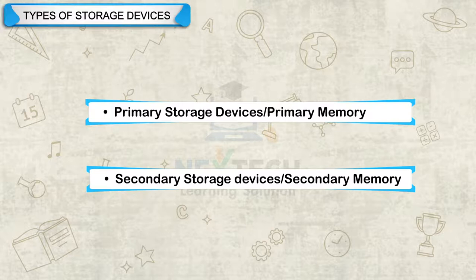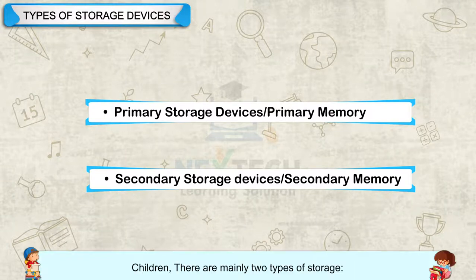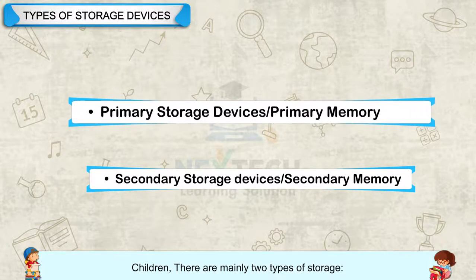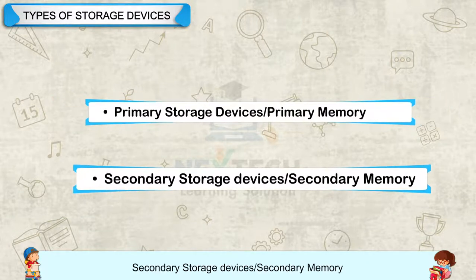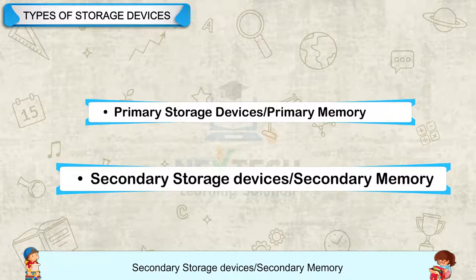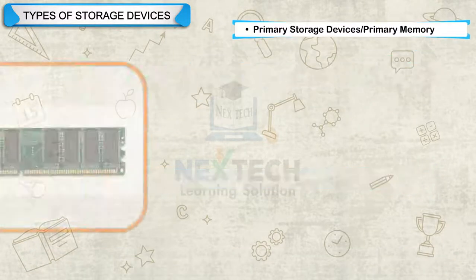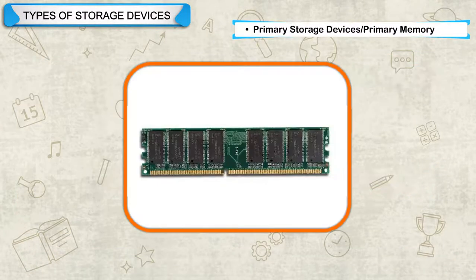Types of Storage Devices: Children, there are mainly two types of storage — Primary Storage Devices or Primary Memory, and Secondary Storage Devices or Secondary Memory.